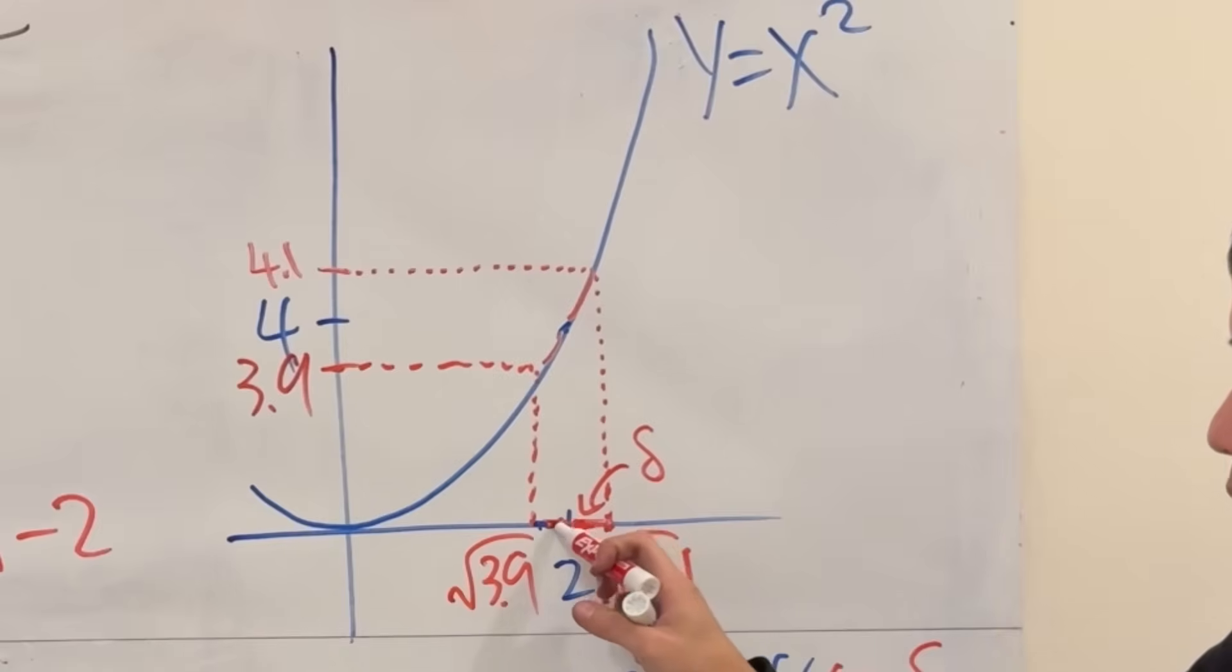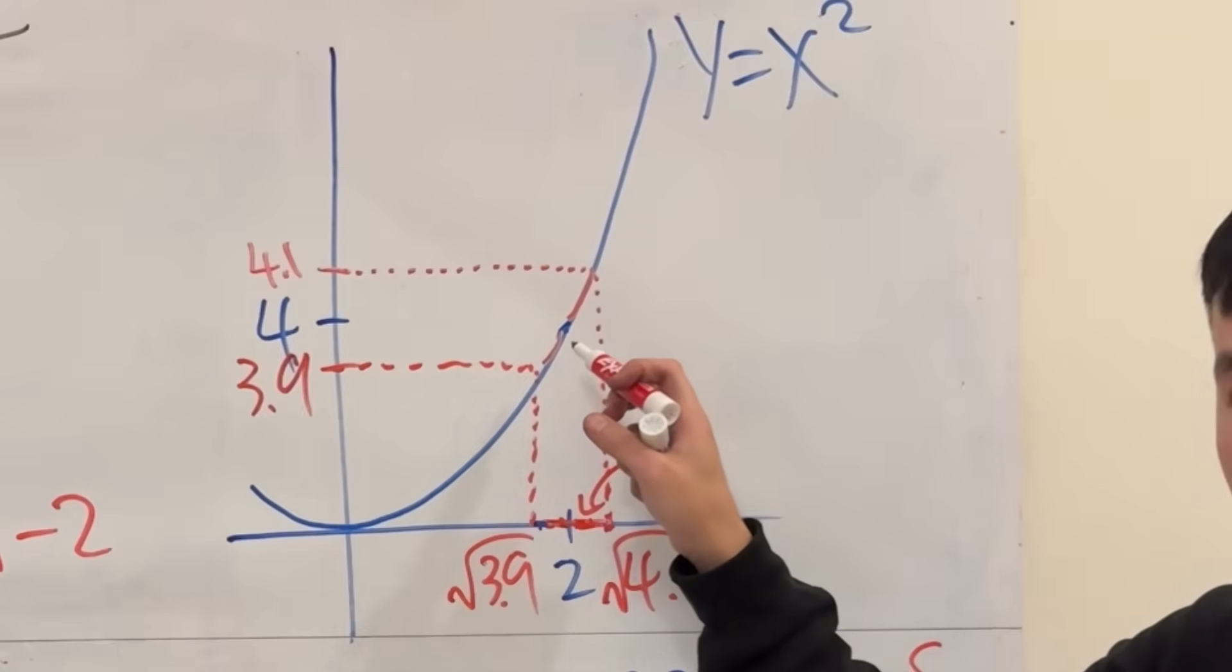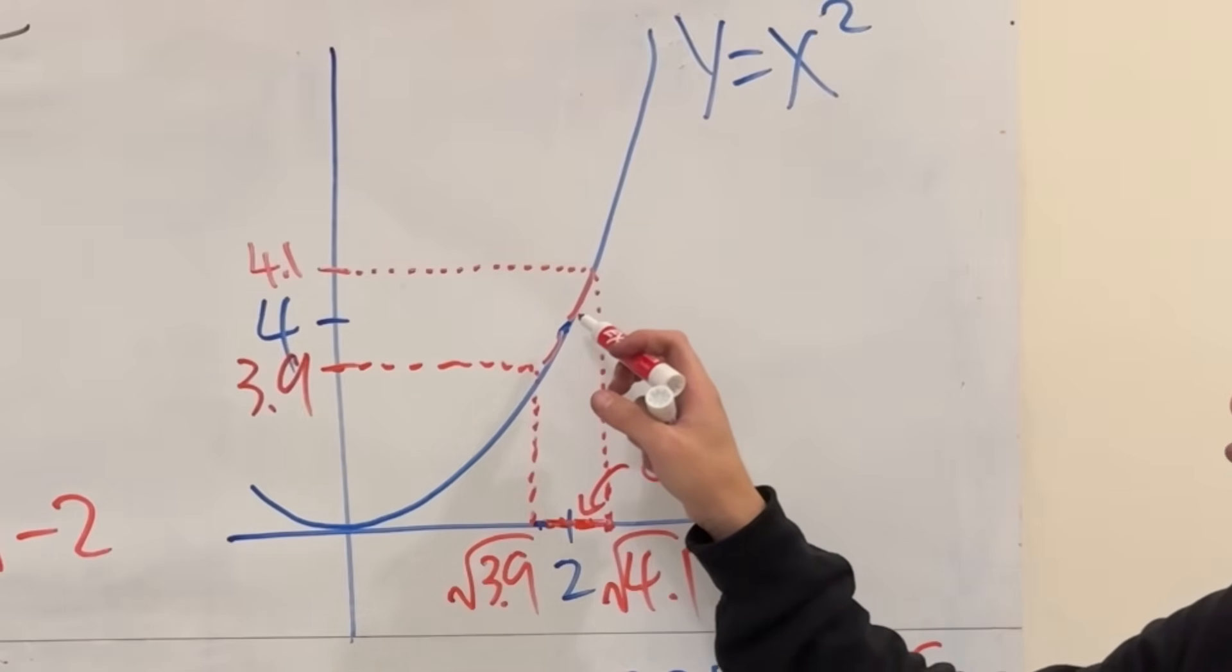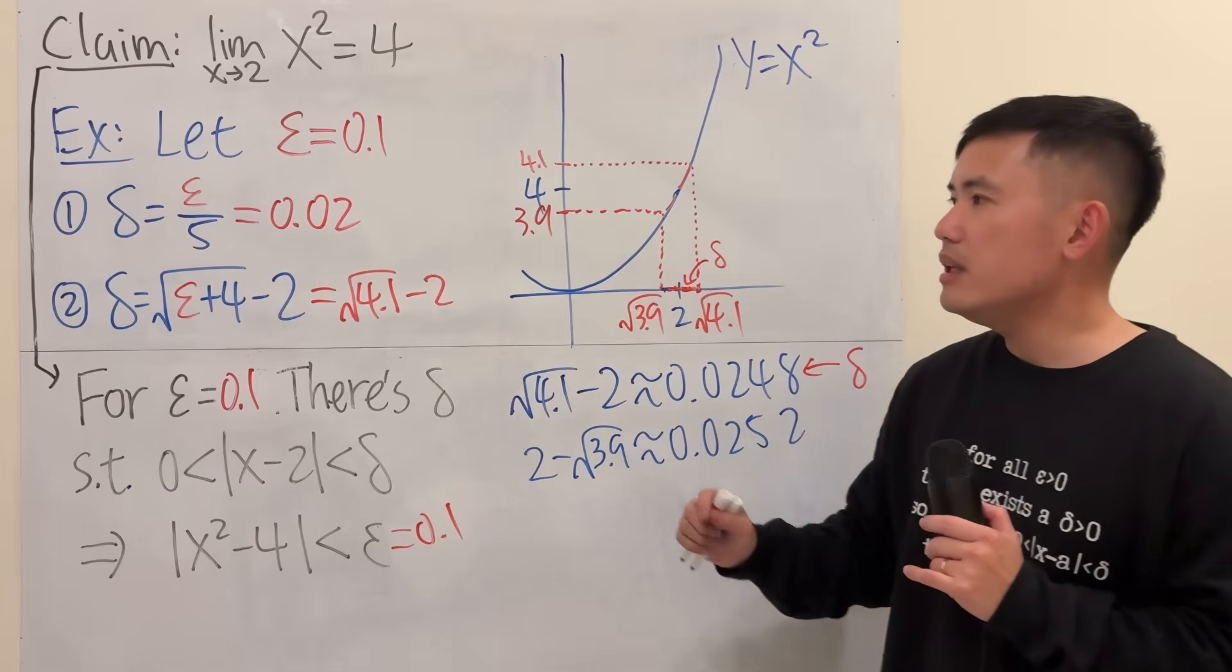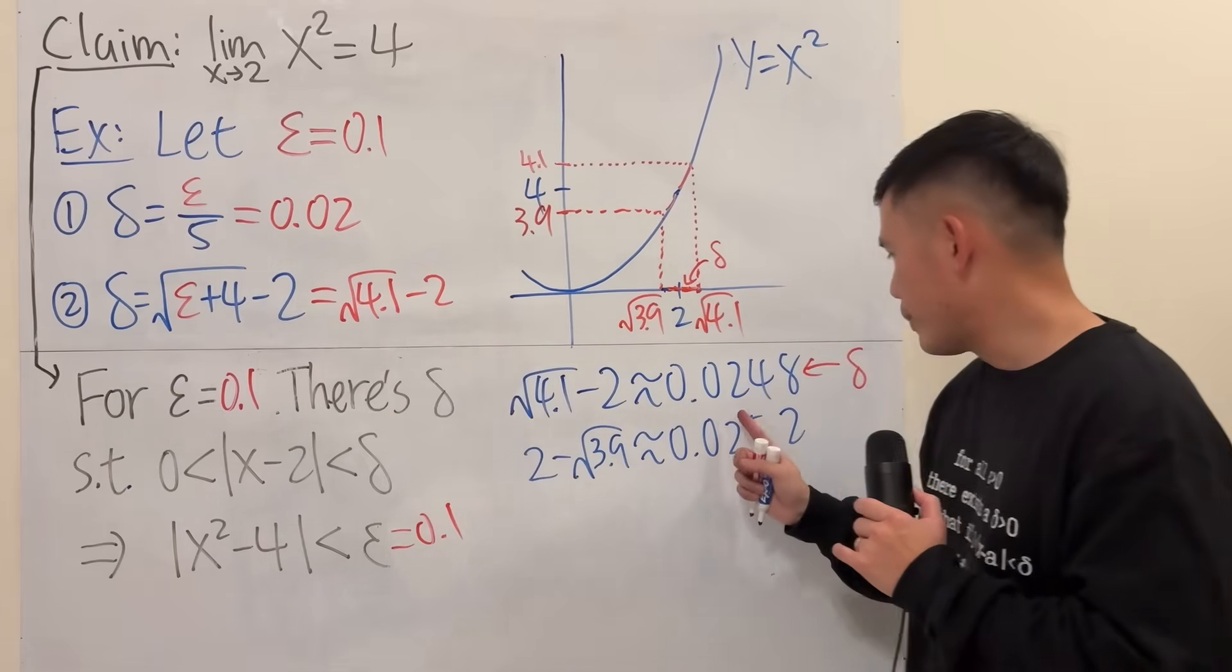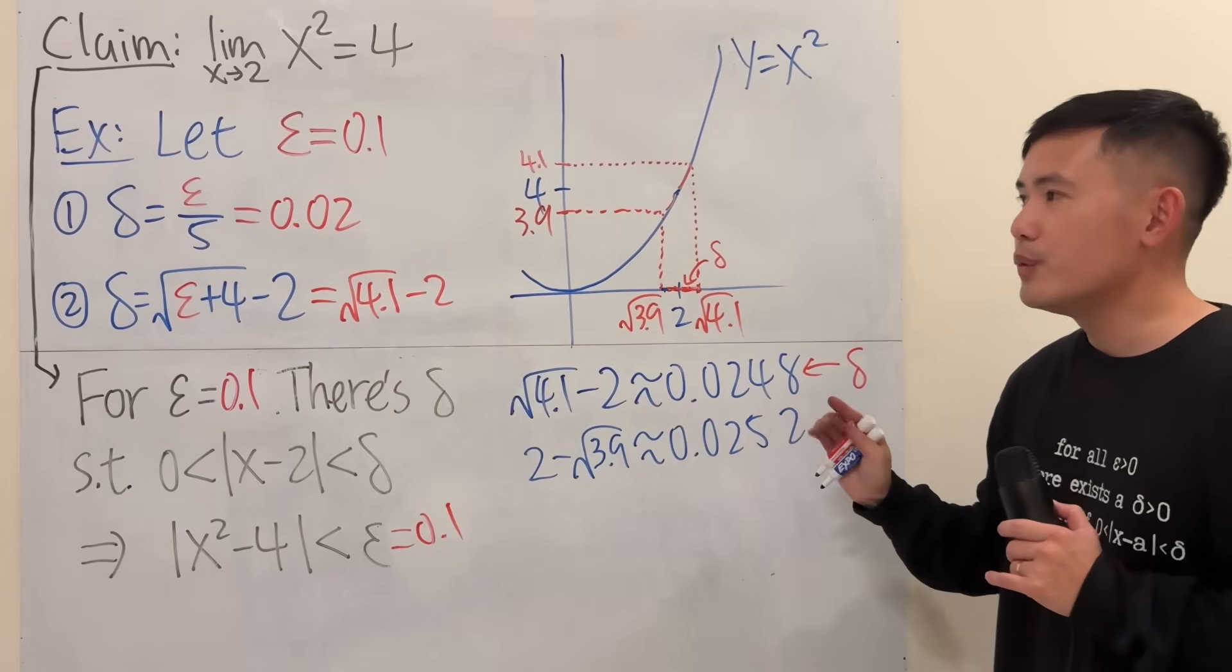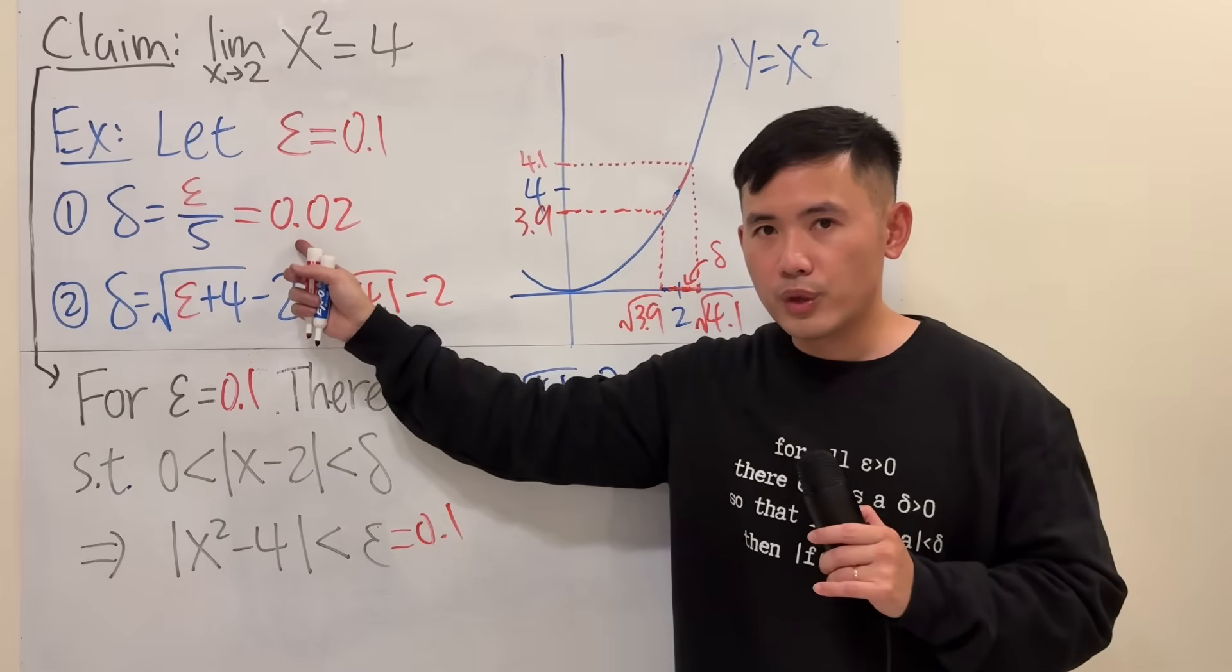This part, this part, when you go up, you will be for sure within 0.1 away from 4, guaranteed. Any delta value smaller than 0.0248 will work. And of course, this is smaller than that, so this will also work. You can come up with infinitely many formulas for delta that will make this work. You can have epsilon over 27. That will work as well, but nobody does that. These are the two standard ways.